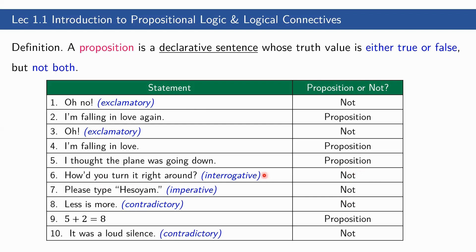Any questions are not propositions because they are not declarative. Seventh, 'Please type hes or yam' — this is not a proposition because it is imperative, or in Filipino, pautos or pakiusap. Eighth, 'Less is more' — you may say this is a declarative sentence, but it is not, because it is contradictory. A proposition's truth value must be either true or false, but not both. Here we cannot determine whether it's true or false because this is subjective. Ninth, 'Five plus two is equal to eight' — this is a proposition. Tenth, 'It was a loud silence' — this contains an oxymoron, 'loud silence,' which is contradictory. Hence, this sentence is not a proposition.